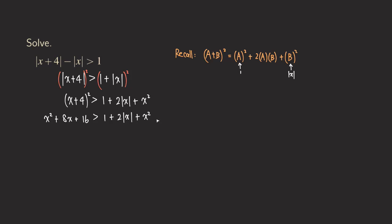Now you can see that we can cancel both x squared terms from both sides — they're both positive x squared, so we subtract x squared from both sides. Then we move the 1 over by subtracting 1 from both sides, so we get 8x plus 15 greater than 2 times the absolute value of x. We still have an absolute value here, but it's better than the original because there were 2, and now there is only 1 absolute value.